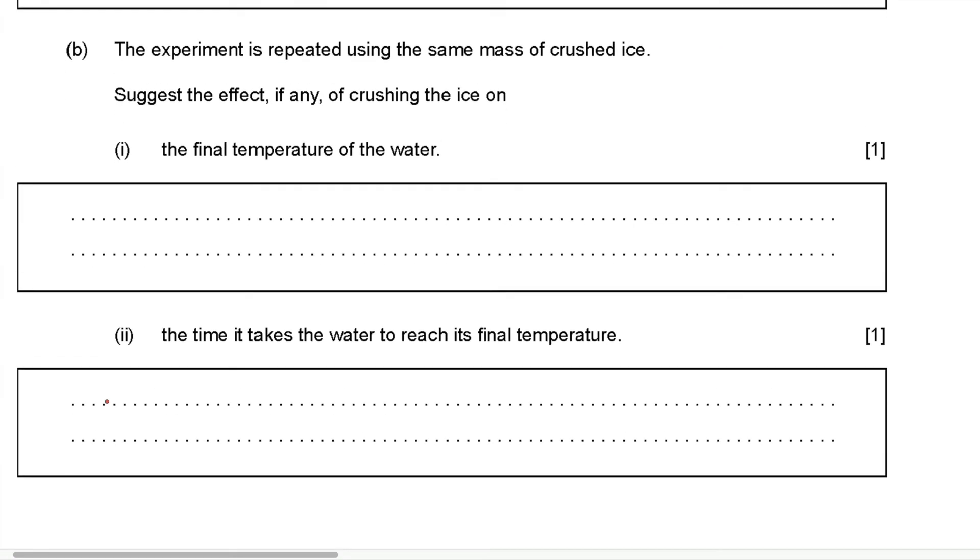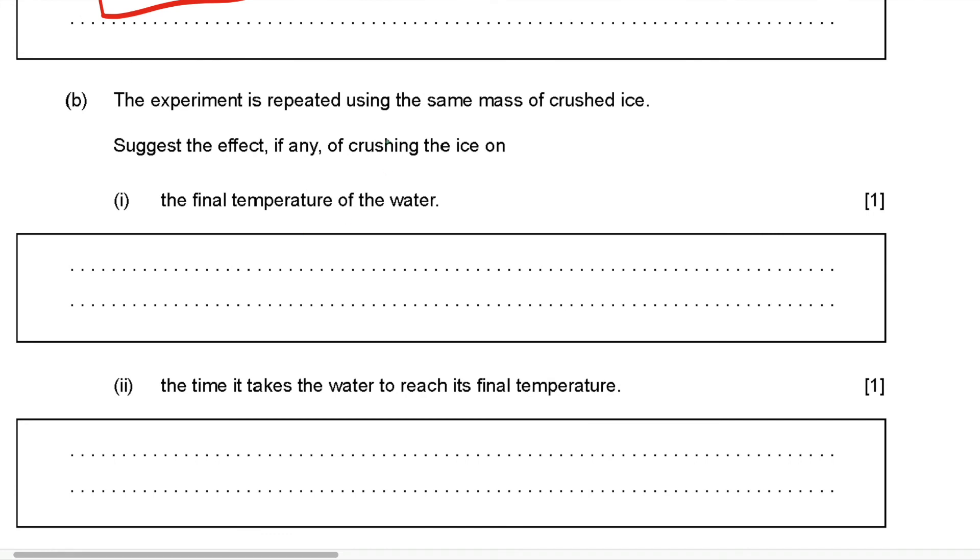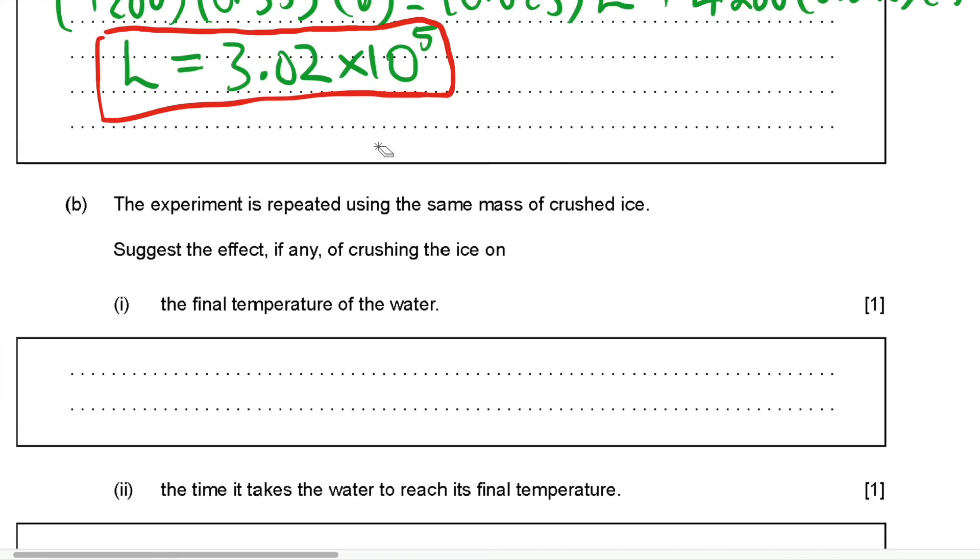The experiment is repeated using the same mass of crushed ice. What is the effect, if any, of crushing the ice on the final temperature? We know final temperature does not change just because you're changing the form of the ice, because it really depends on the mass of the ice instead of their surface area. So for crushed ice, what you're doing is you're increasing area, but you are not changing mass. Heat released is equal to heat absorbed, so the final temperature remains constant. Final temperature does not change.